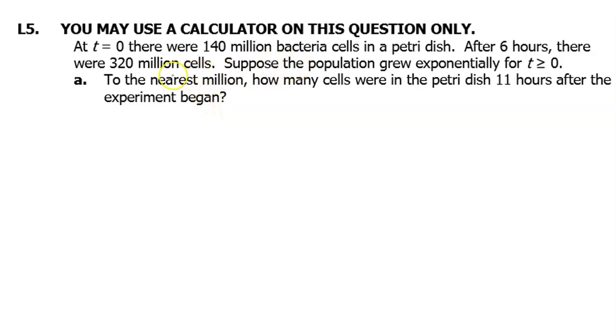When they say that the population grew exponentially, what you should be thinking is we're dealing with a function of this form: f of t should equal a times b to the t power. This is the form of an exponential equation. The variable is the exponent, and of course, you can have some type of multiplier in the front that is a constant. Now, our job is to figure out what a and b are so we can have a function that we can use to answer the question. They gave us two initial conditions that we can use to find a and b.